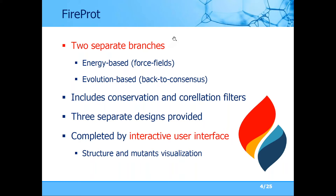For that we designed the FireProt method, which is a hybrid method using two separate branches. One approach is based purely on energy using force fields to predict protein stability. The second approach is based on evolution — most notably we use back-to-consensus analysis. We utilize both sequence and structural information, including code conservation and correlation analysis to filter some mutations out at the beginning. At the end we provide three separate designs: one based purely on force fields, one on evolution, and one combining both.